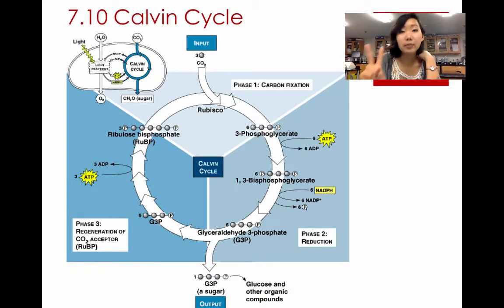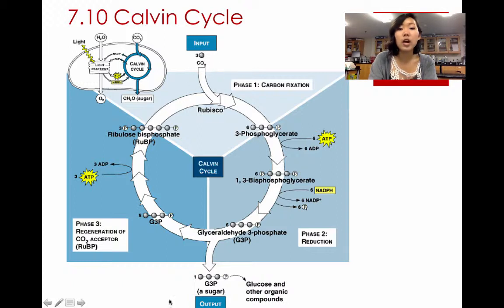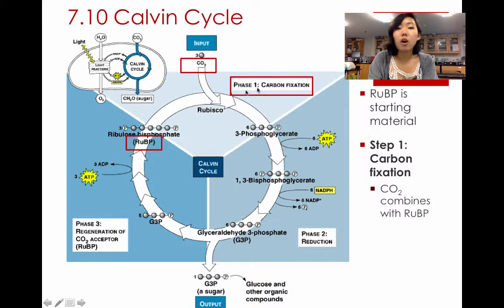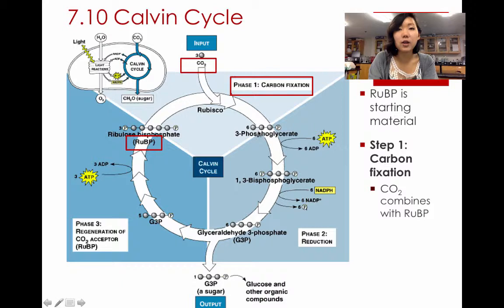We're going to talk about the Calvin cycle, which is the second part of photosynthesis. The input for the Calvin cycle is CO2, carbon dioxide, which is our carbon source to ultimately form a sugar compound called G3P. G3P is an intermediate for glycolysis, and you can go from G3P backwards to form glucose. We start off with RuBP, the starting material that's inside the cycle, which combines with CO2. The first step is carbon fixation — that's when the CO2 combines with the RuBP to form a new compound.